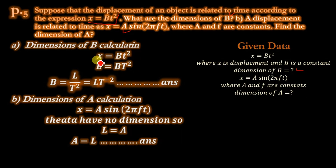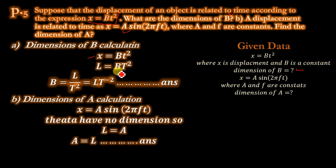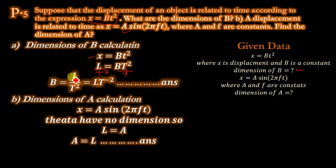For x = b·t², the dimension of x (displacement) is L, and the dimension of t² is T². So L = b · T². Solving for b: b = L / T², which can be written as b = L·T⁻². Therefore, the dimension of b is L T⁻².